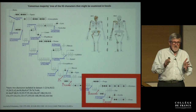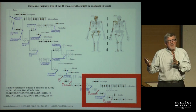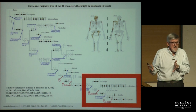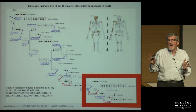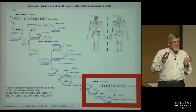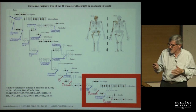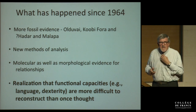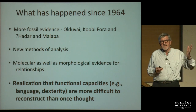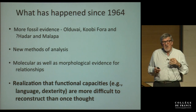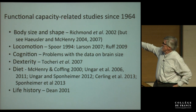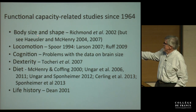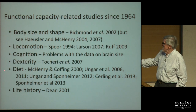Paleontologists must have done something very bad, because the evidence they have to use doesn't seem to be very good for reconstructing evolutionary history. There are also some assumptions made in 1964 and since that we think are wrong. I've called these functional capacity-related studies — things that look at body size and shape, locomotion, cognition, dexterity, diet, and life history. Let me just focus on cognition.